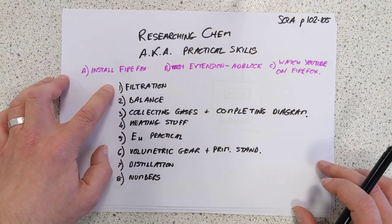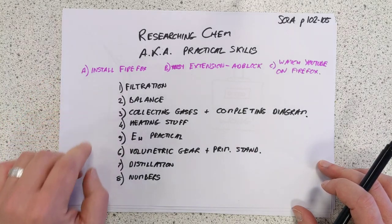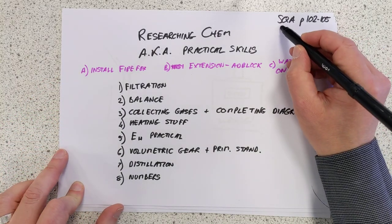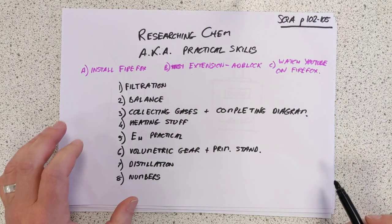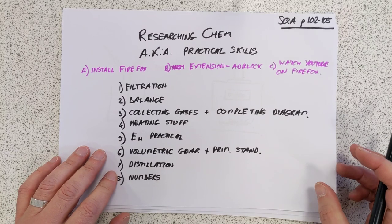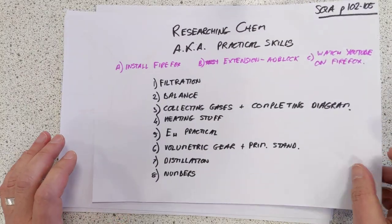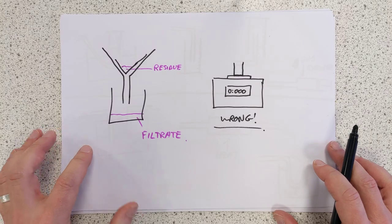These are the things that we're required to know about in terms of actually being able to do. This is SQA page 102 to 105. Researching chemistry skills, guys. Let's start with filtration and using a balance. It's not like me to be organized, but I've actually done some of these drawings before.